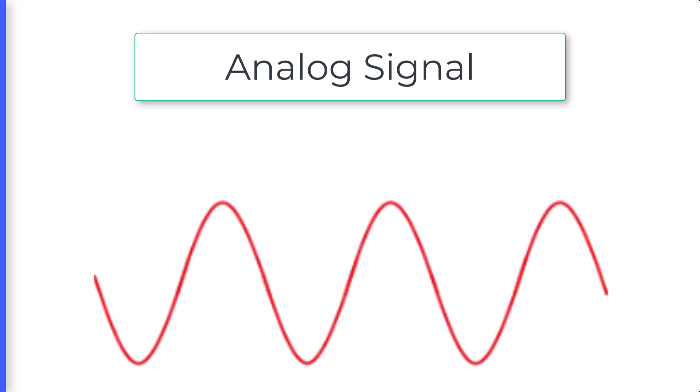Unlike the digital signal, an analog signal can take on an infinite number of states. It's continuous, meaning the voltage can be any value within a range.